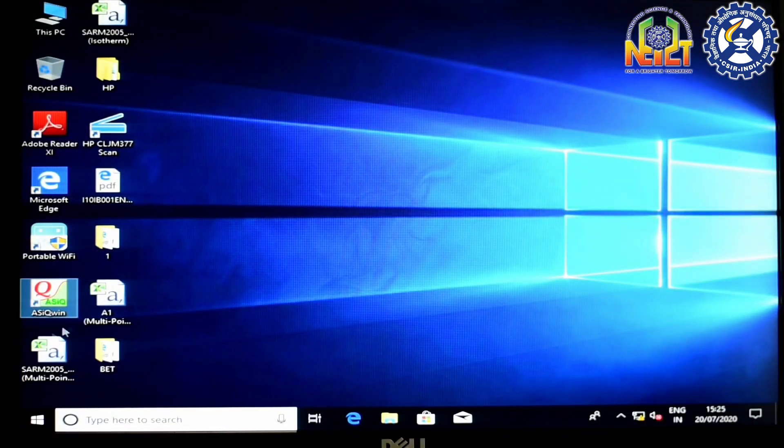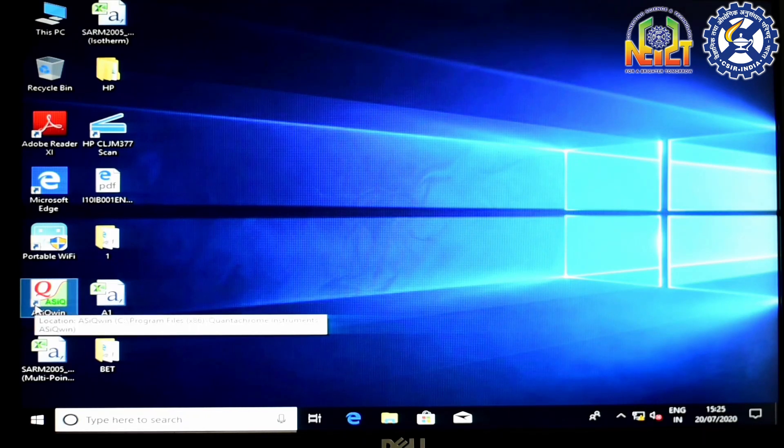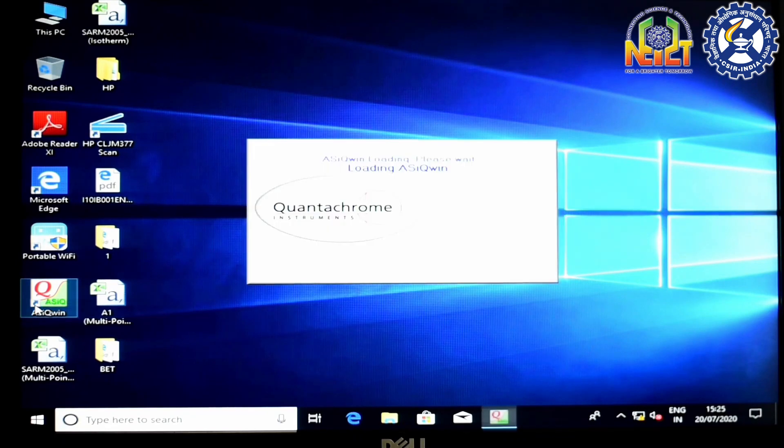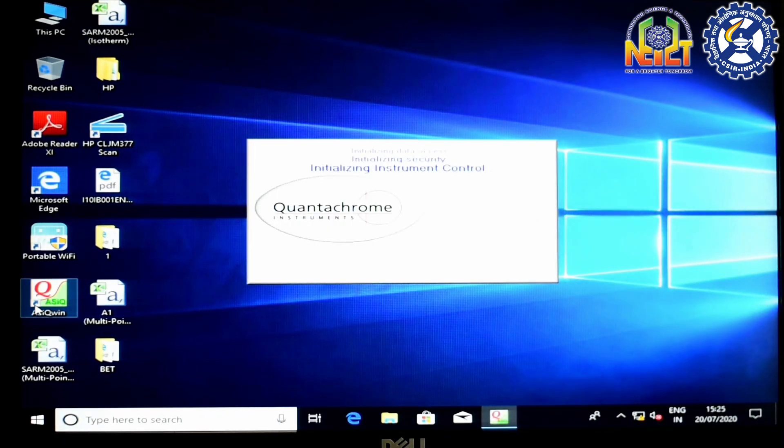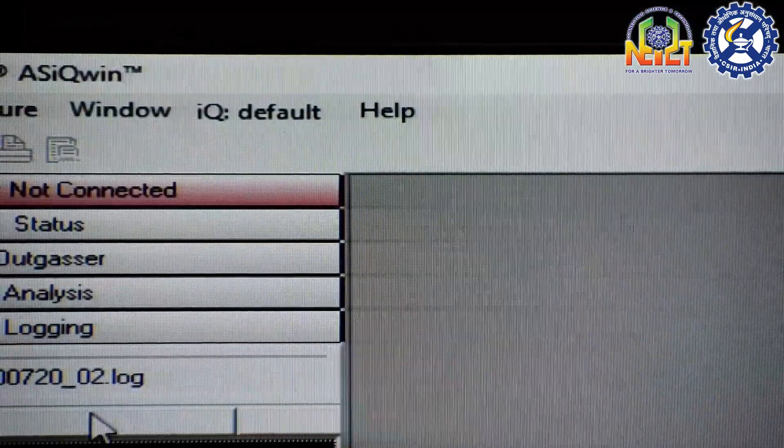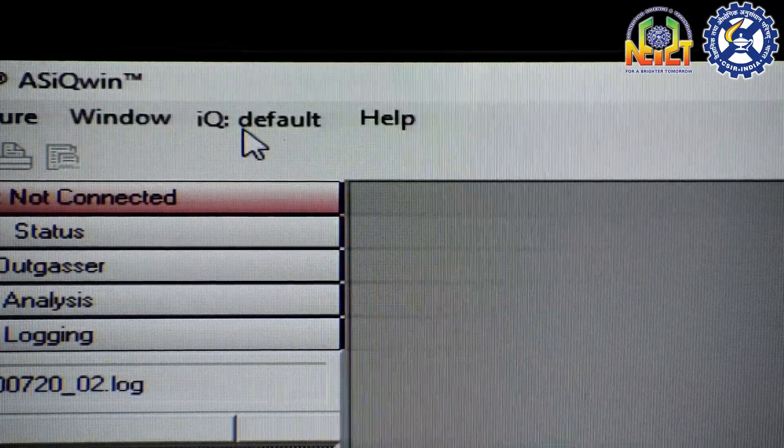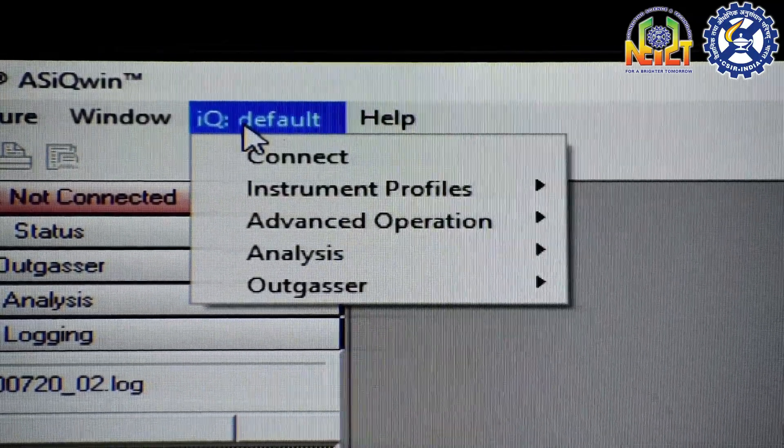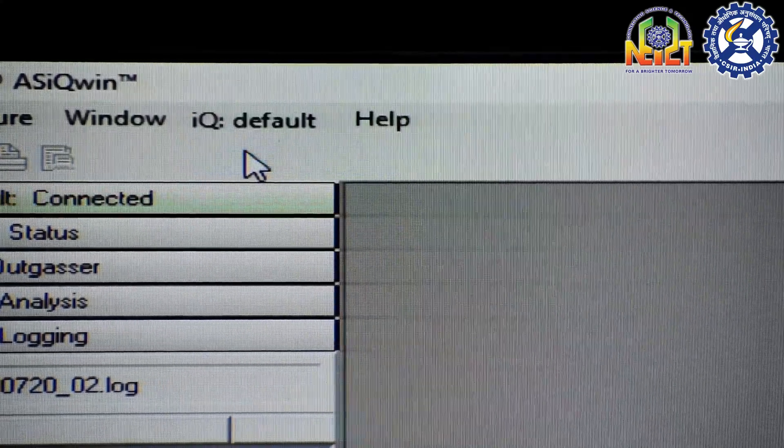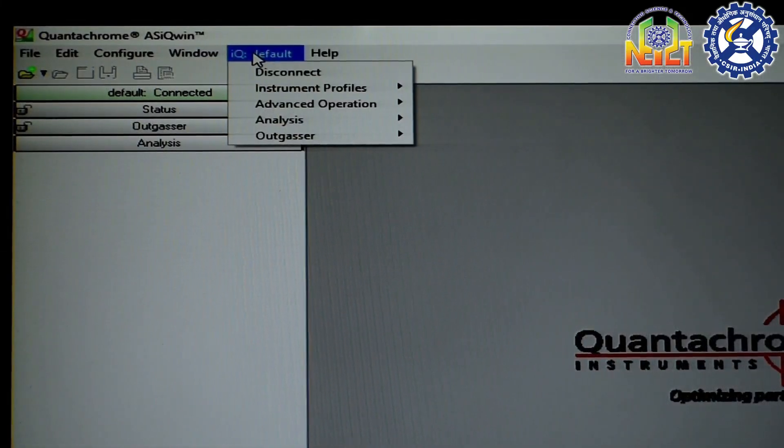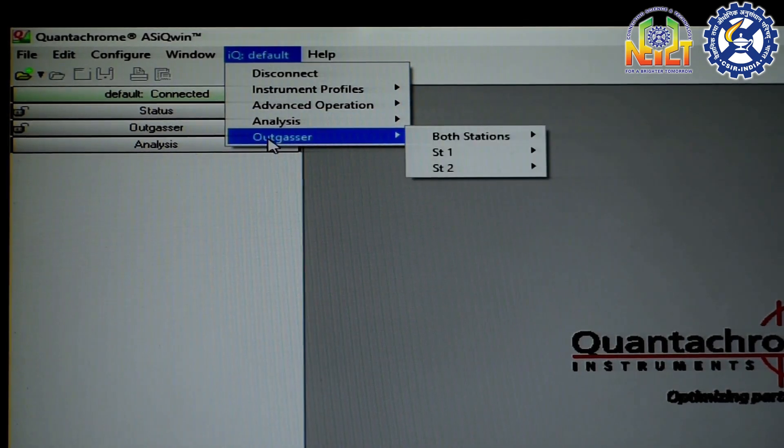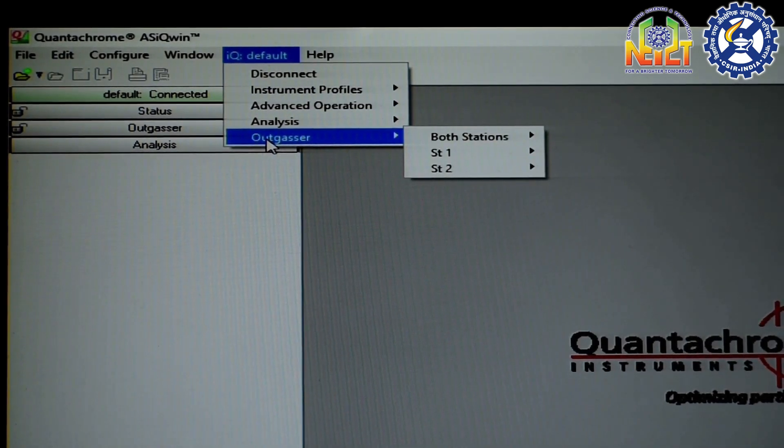This is the ASQ Win software which is used to measure the BET surface area of a given sample. In the software we have to click the IQ default tab and then click the connect option. In the IQ default tab we have to click the outgassing option for degassing and analysis option for measuring surface area.